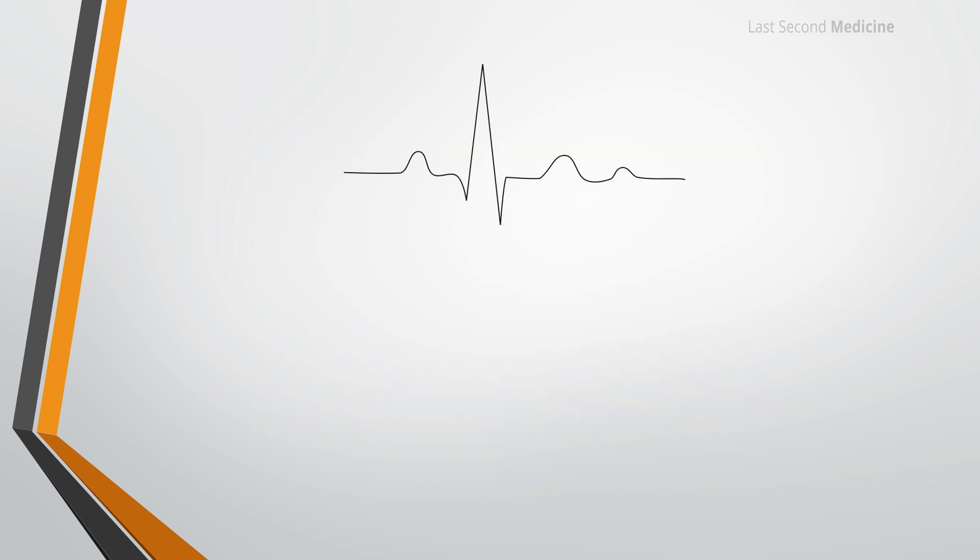This is a single normal ECG portion. You can notice different positive and negative deflections away from the baseline. These are called waves in ECG. Then there are isoelectric portions between two adjacent waves which is called a segment. And some isoelectric portions include one or more waves in them, and this is called an interval in the normal nomenclature of an ECG.